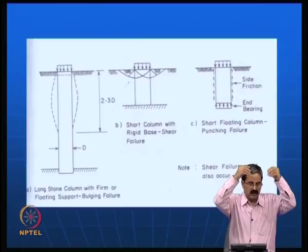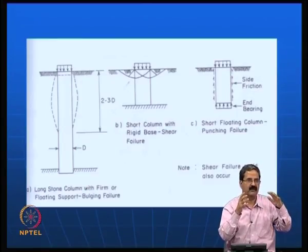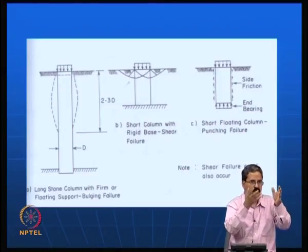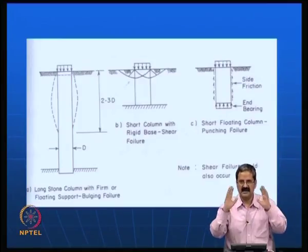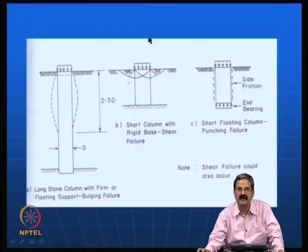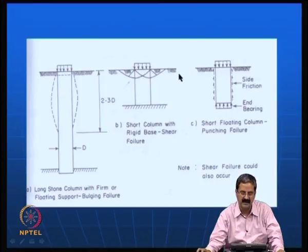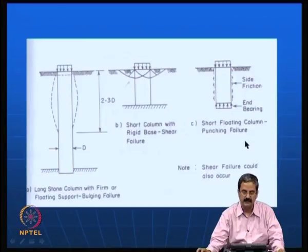If you are trying to apply a load and the stone column bulges, it is not very effective — you would like to avoid it. In the construction process, you can put a casing made of geocell or similar material to prevent bulging failure. If the depth is shallow, there is also a possibility of a simple shear failure — a classical soil mechanics type of failure. There is also the possibility of side friction and end bearing failure. We must understand these failure mechanisms and ensure the columns do not experience these problems.